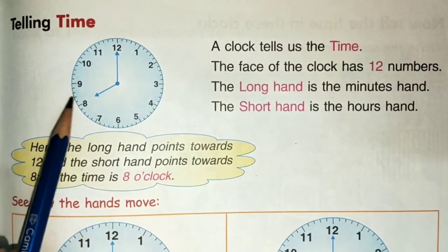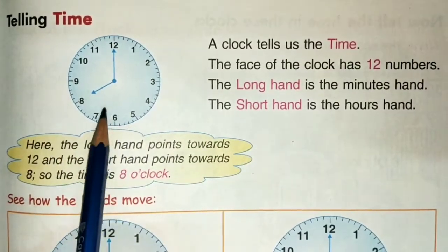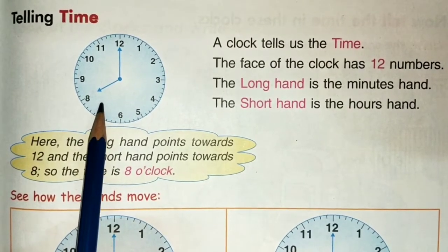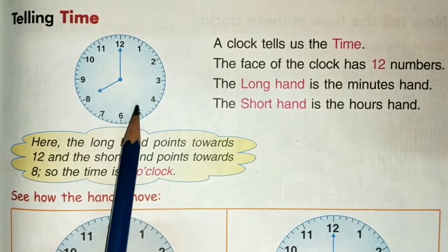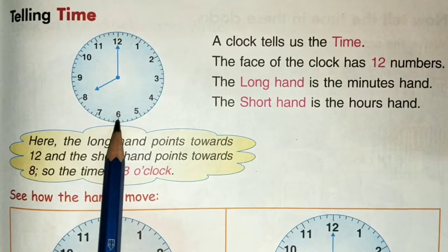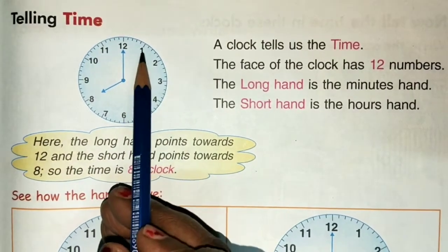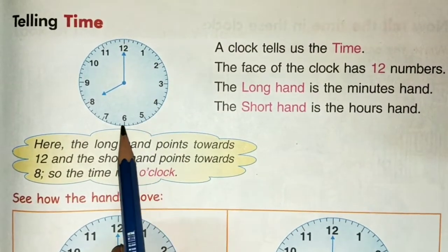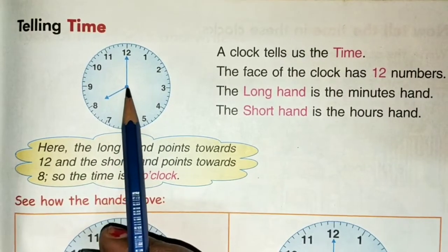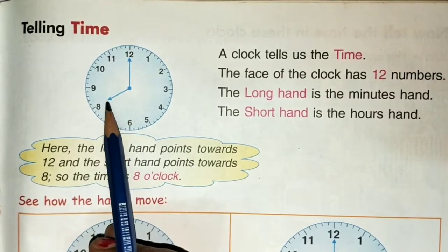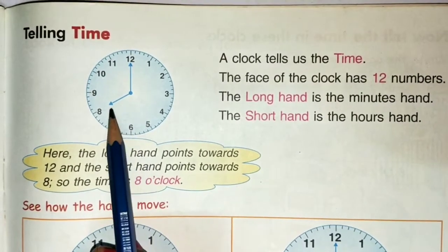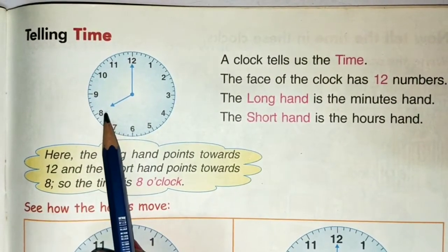This clock tells us time. The clock face shows what? It shows numbers. Twelve numbers: 1, 2, 3, 4, 5, 6, 7, 8, 9, 10, 11, 12. It has one long hand and one short hand. The long hand is called the minutes hand, and the short hand is called the hours hand.